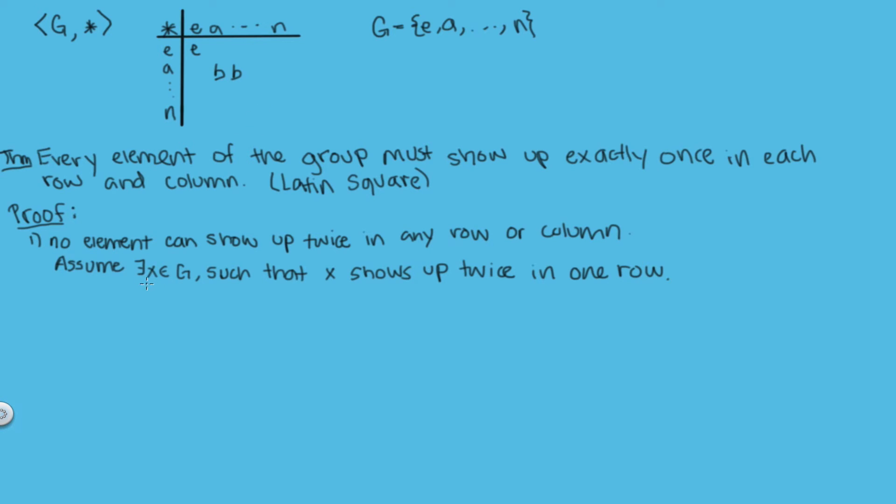So if there was an x in our group where this could happen, that means that x equals a star b and x equals a star c for some a, b and c in our group G. So for some row a and for some columns b and c, a star b gives us the same answer as a star c. Now if this was the case we would write that a star b equals a star c.